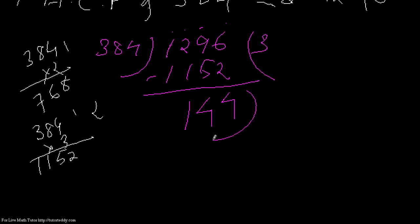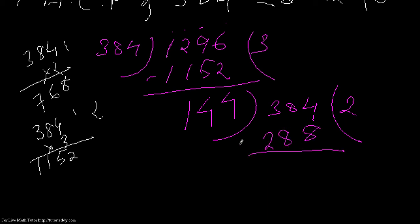Now I take this remainder, 144, as my second divisor, and divide the first divisor 384 by it. 144 into 2 is 288. Subtracting 384 minus 288: 14 minus 8 gives 6, bringing down gives 96. So I get 96 as the next remainder.